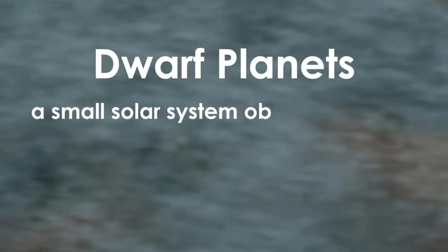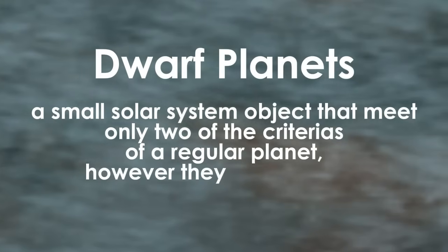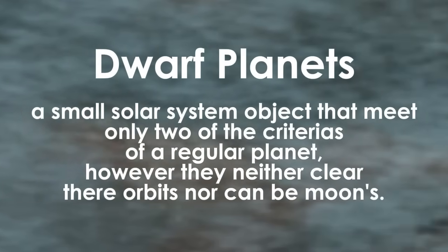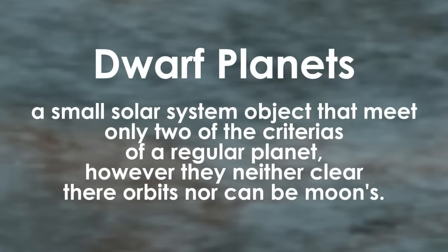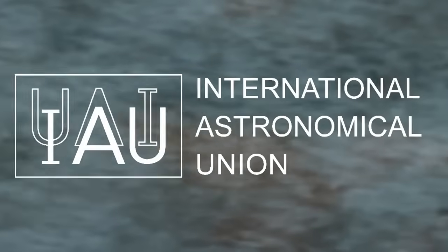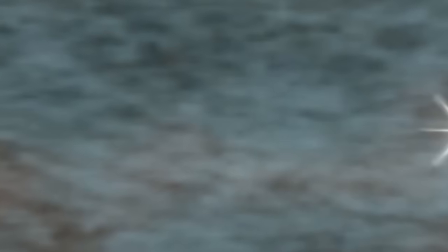But our main focus here are the dwarf planets. A dwarf planet is a type of small solar system body that only meet two of the criterias that normal planets follow. The only difference is that they cannot clear their orbits due to their small size, and as a bonus rule, they cannot be a moon of a planet. The International Astronomical Union, IAU, were the people that conducted these rules, which also led to the unfortunate demotion of a particularly well-known Kuiper Belt object.